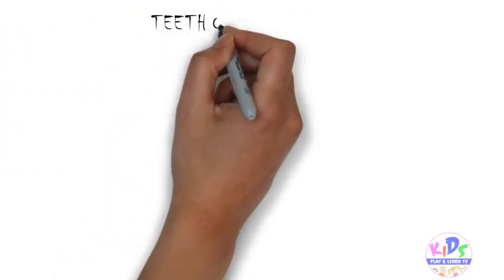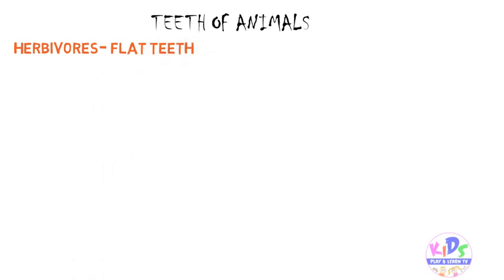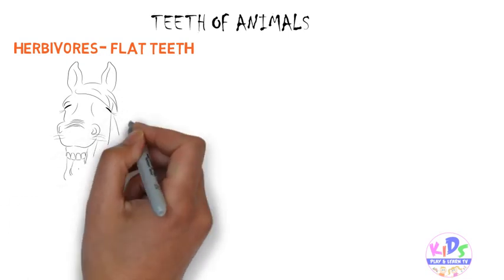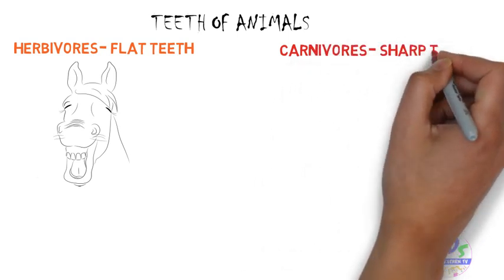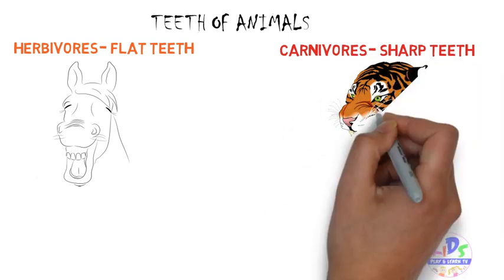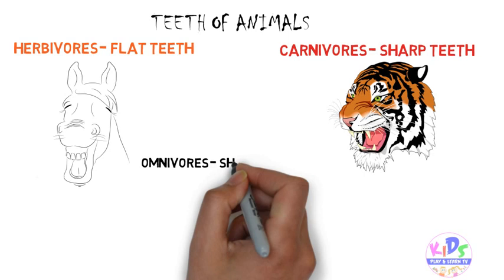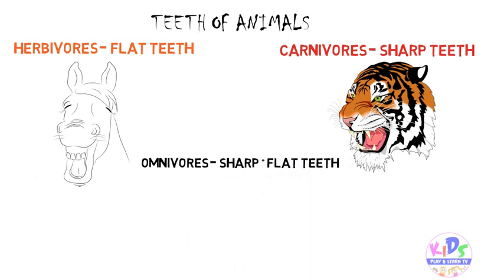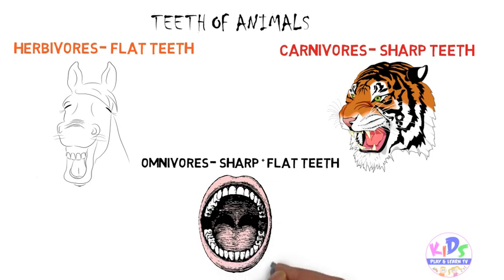Now let's discuss the types of teeth of these animals. Herbivores have flat teeth to chew their food. Carnivores have sharp teeth because they eat flesh and need to tear or cut it into pieces. Omnivores have both sharp and flat teeth since they eat both plants and flesh — they use flat teeth when eating plants and sharp teeth when eating flesh.